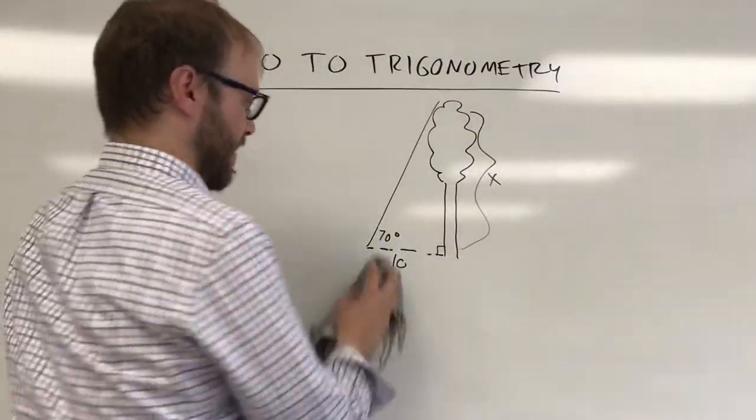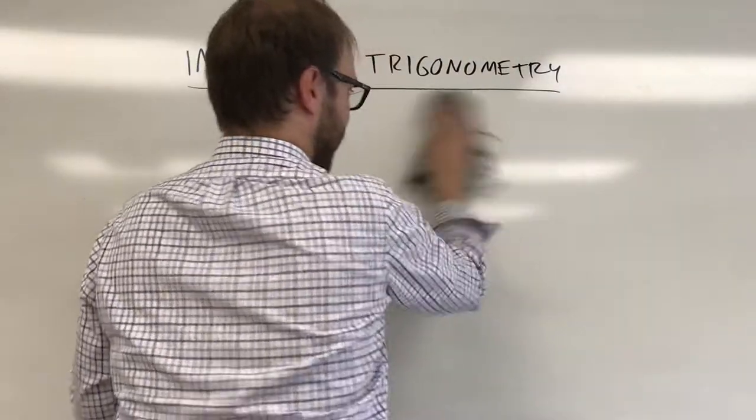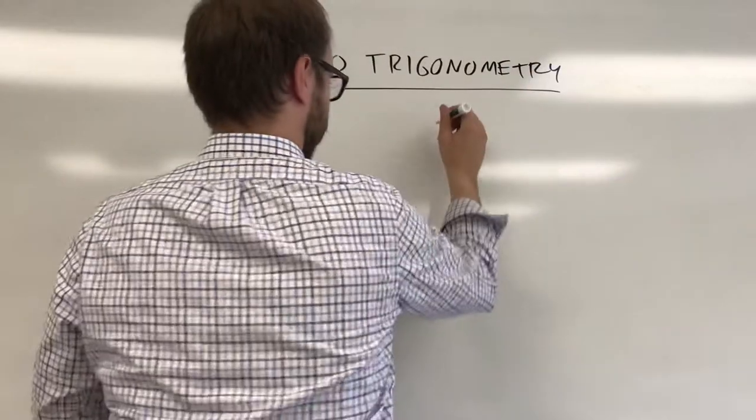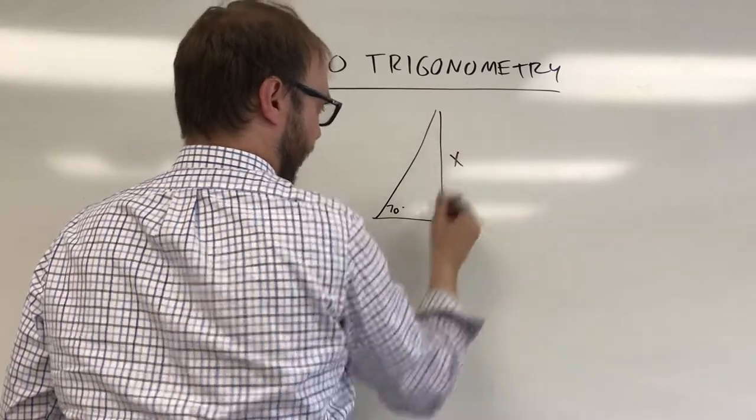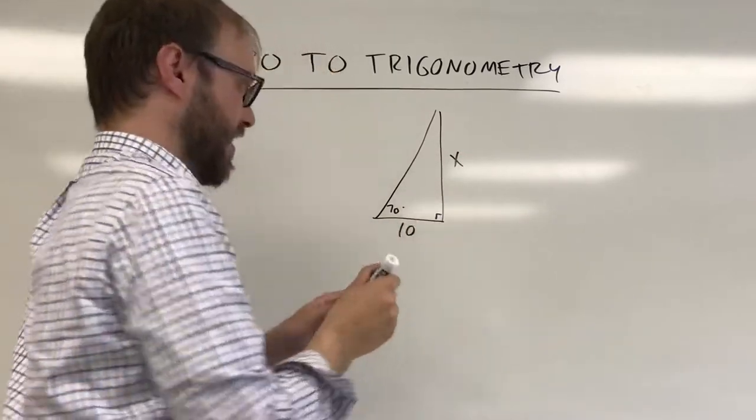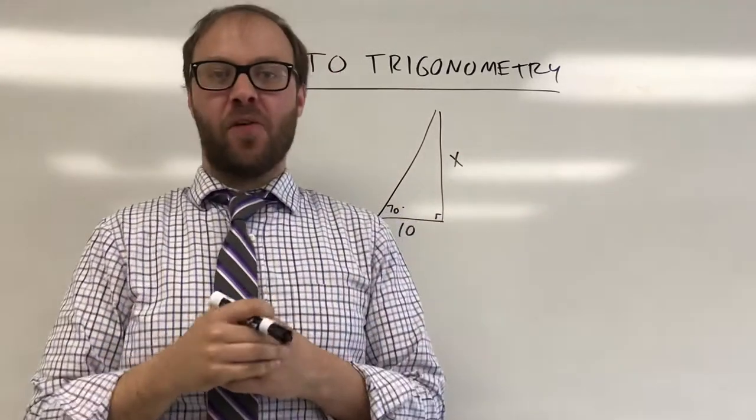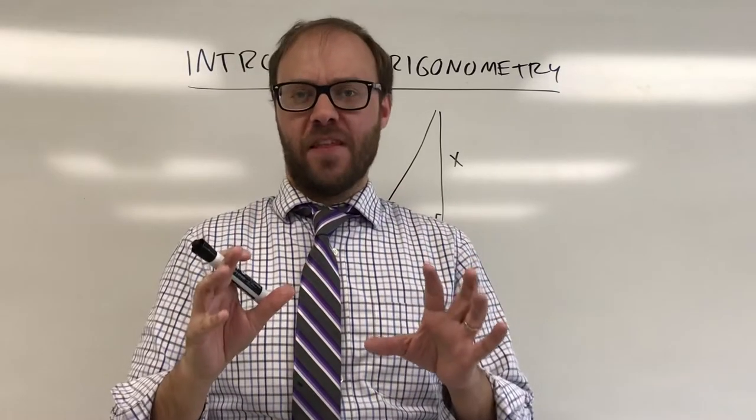So what dad was really trying to do was he had a right triangle with a 70 degree angle. We don't know what the patterns are for a right triangle with a 70 degree angle. We didn't memorize those. But there's a really important idea here that this is all based on.